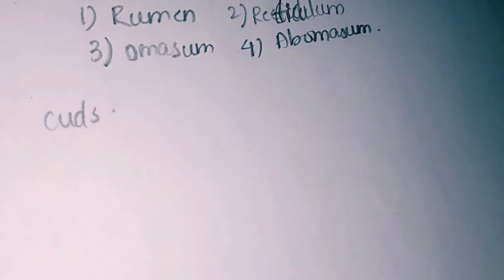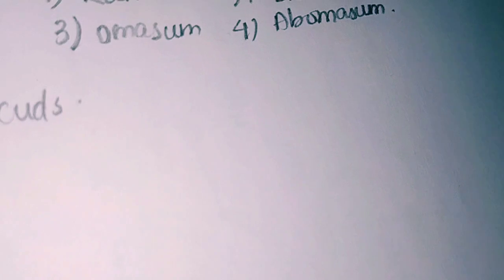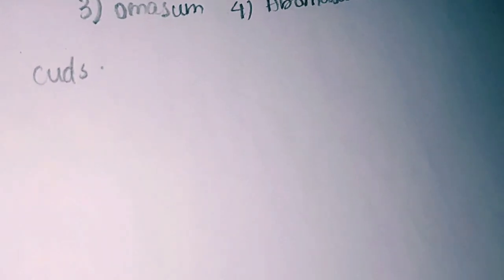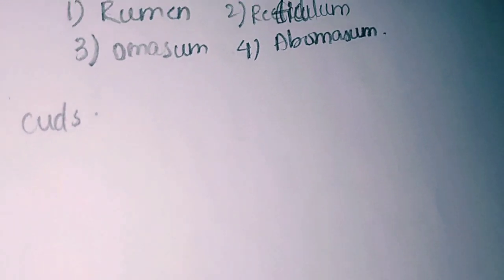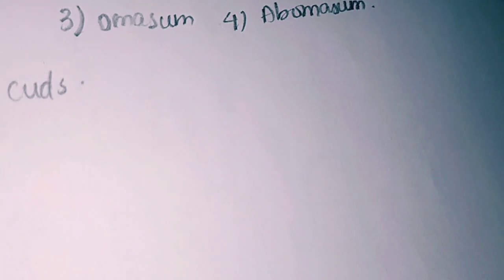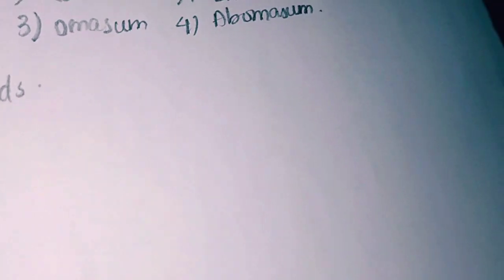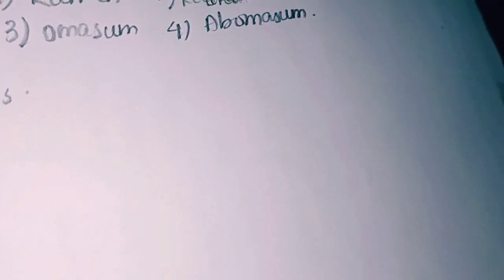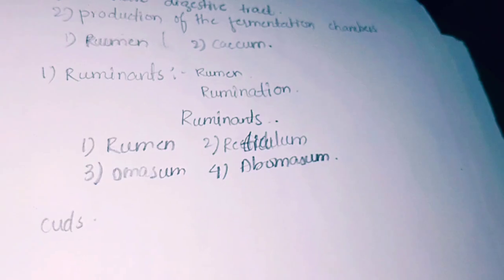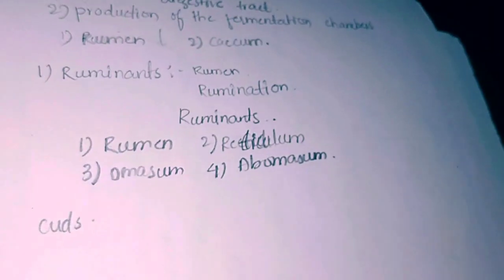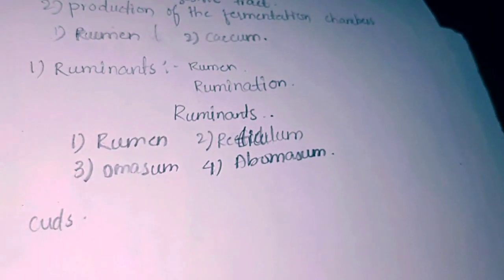Then the curds regurgitate the food into the mouth where it is re-chewed and re-swallowed. Then the food gets transported to the third chamber, the omasum, and is churned again by strong muscle contractions. From omasum, it gets transported to the stomach, the true stomach or abomasum, and finally into the small intestine where the food is digested and absorbed by the ruminants. If the food material is undigested, it can be expelled from the body as feces.